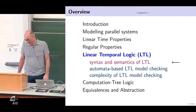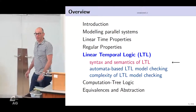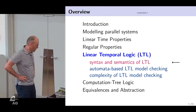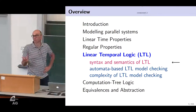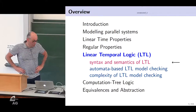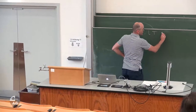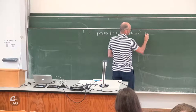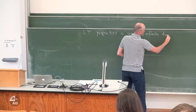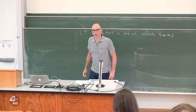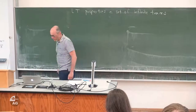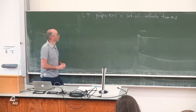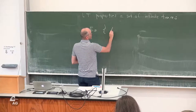Welcome. In the last couple of lectures we already saw the first algorithms to do model checking with regard to omega-regular properties or regular safety properties. So far we have always specified LT properties as a set of infinite traces, which is for practical purposes rather cumbersome. Typically we are looking for more succinct, more compact representations of these properties.